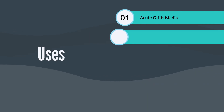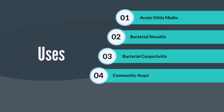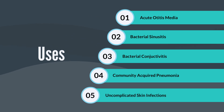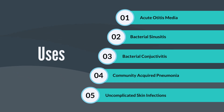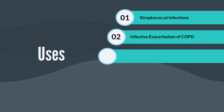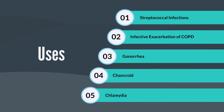Now let's look at some of the uses — this list is not exhaustive. Generally, it can be used for acute otitis media, which is basically ear infections, bacterial sinusitis, bacterial conjunctivitis (what we normally refer to as pink eye), community-acquired pneumonia, uncomplicated skin infections, streptococcal infections, and infective exacerbation of COPD. Azithromycin is one of the go-to medications when COPD patients develop an infection.